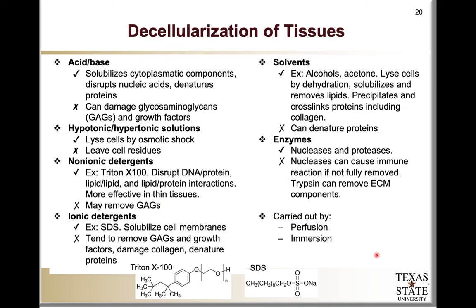To decellularize tissues, we need to expose them to a set of solutions that lyse the cells and dissolve cellular components to remove them, while leaving the extracellular matrix in place so that the tissue scaffold is still there. Some of the solutions that have been used include acids and bases, hypotonic or hypertonic solutions, non-ionic detergents, ionic detergents, solvents, and enzymes. All of those have benefits and drawbacks. For example, a hypotonic or hypertonic solution will lyse the cells by osmotic shock, but it doesn't dissolve the cell components, so you're left with cell residues. Typically a combination of these substances is utilized to take advantage of the benefits of each while addressing the limitations of each.